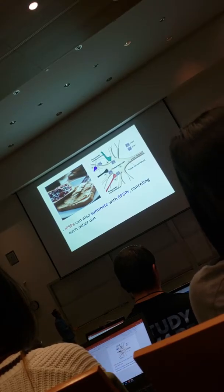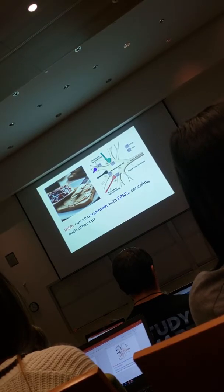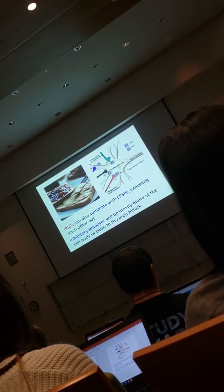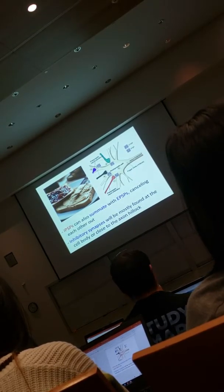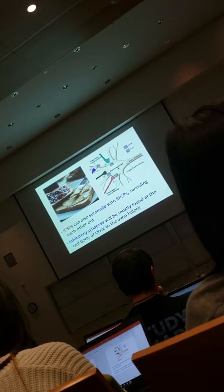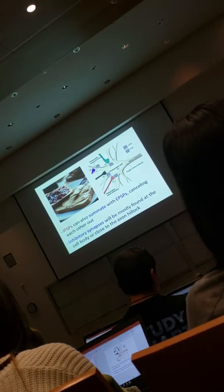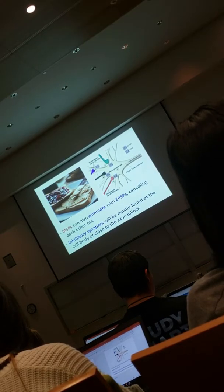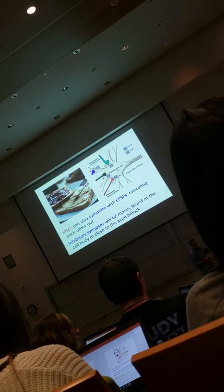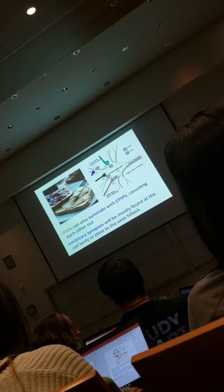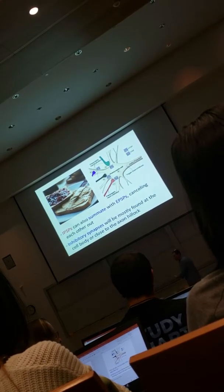IPSPs can summate with EPSPs, cancelling each other out. We typically find those inhibitory synapses pretty close to the axon hillock. Why is that important? Because the impact of hyperpolarization is greater right at the axon hillock — I'm basically changing the starting state before EPSPs have an effect. In many cases these are axo-axonic synapses, still very close to the axon hillock. Any questions about EPSPs, IPSPs, and why we have them?